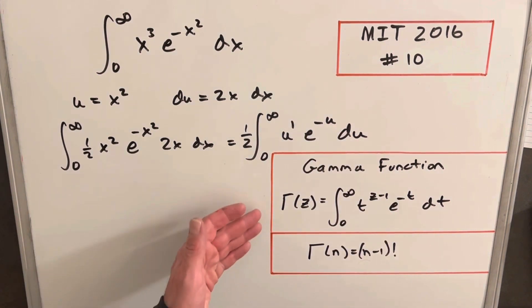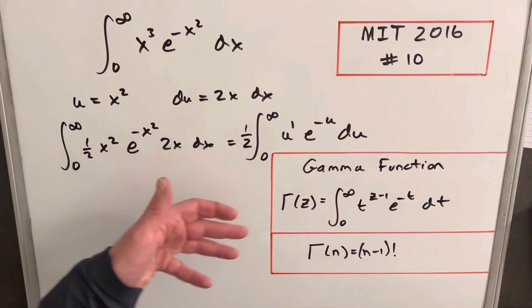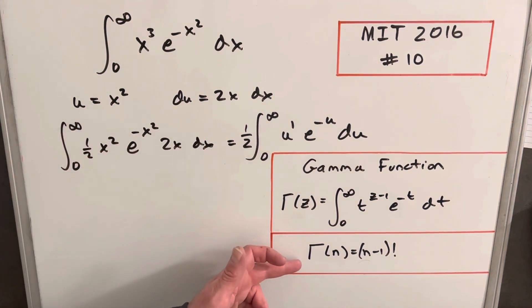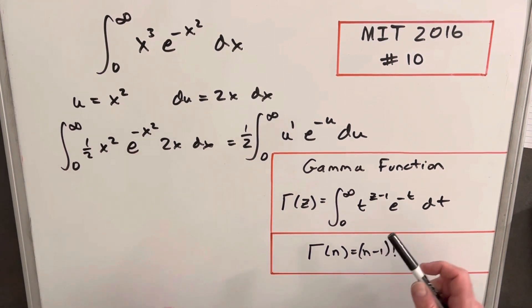But then you might be thinking, okay, what does this do for us? Because it just gets us this crazy gamma. What are we going to do with that? Well, we have this relationship to the factorial that we can use. So what we can do is, if we can get this exactly into the form of the gamma function, we can relate it to the factorial, we know how to calculate the factorial, and then we'll be done.